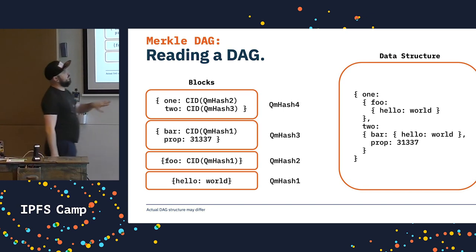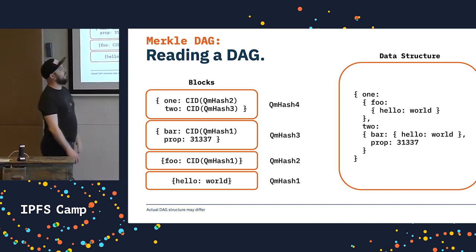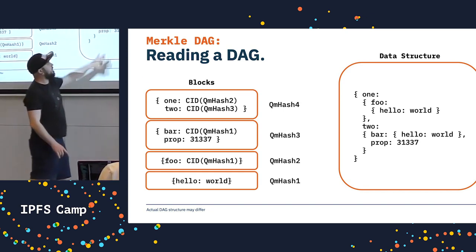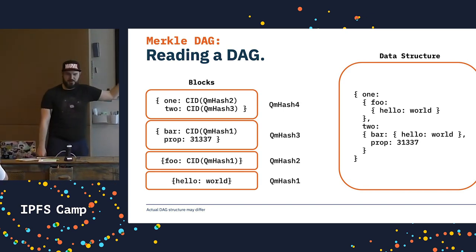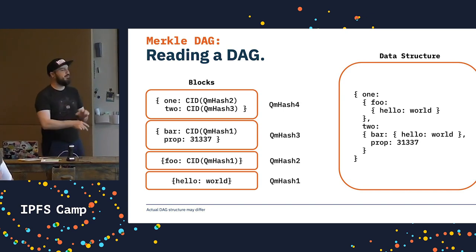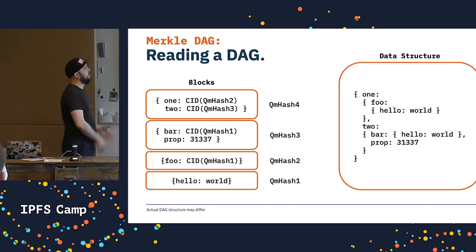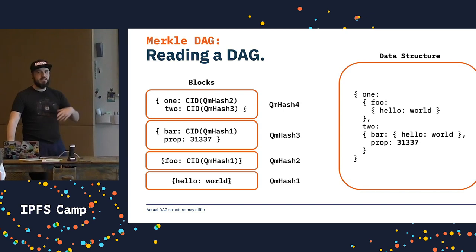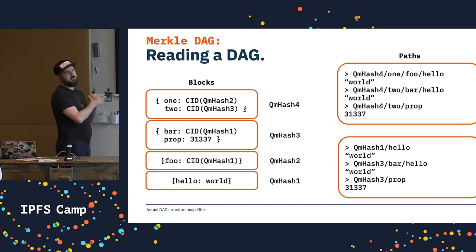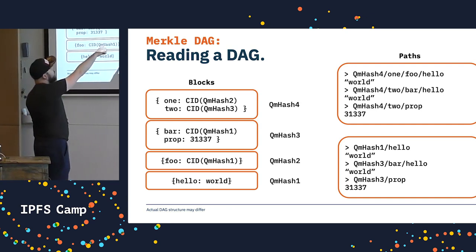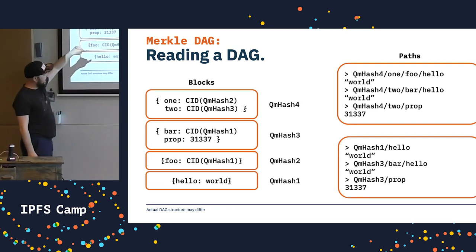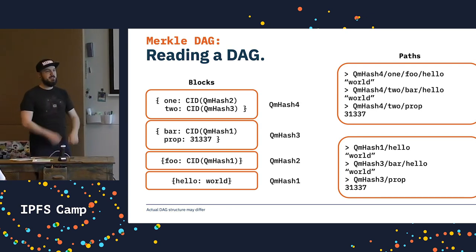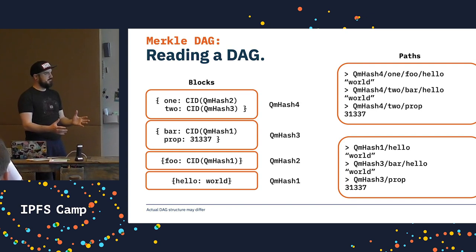What you end up with is a full data structure that you can break into blocks. When you have arbitrarily large data structures and you want to break them into smaller semantic blocks, this is how you do it — with linking. The way that links work in any IPLD or IPFS API is that they get traversed basically transparently. If you take the hash of QM4 (the root node) and follow it through to 'hello', you traverse through the entire structure, grabbing all blocks transparently.